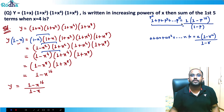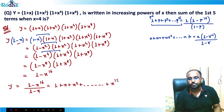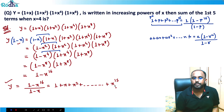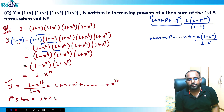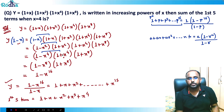So y = 1 + x + x² + x³ + ... + x¹⁵. Now, if we need the sum of the first five terms, those are 1 + x + x² + x³ + x⁴.